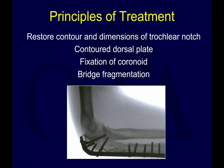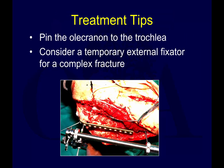Principles of treatment are to restore the contour and dimensions of the trochlear notch and use a contoured dorsal plate. This is not an olecranon fracture where you simply do a tension band. These are not acting like avulsions — you are reconstructing a complex fracture, and in those cases you need a plate. Sometimes you are even bridge plating these.